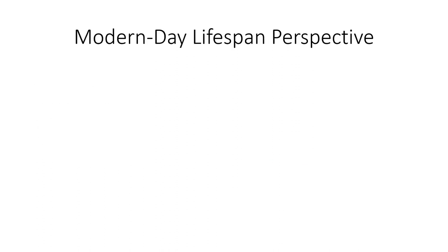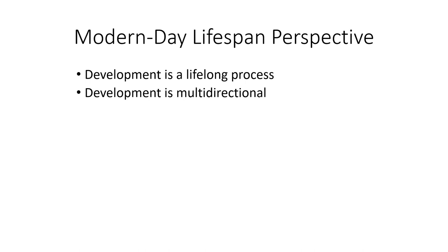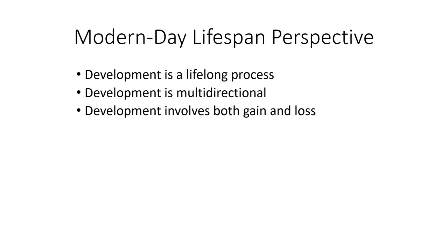Next, let's talk about the modern lifespan perspective in developmental psychology. First, development is a lifelong process — from conception to death. Second, it's multi-directional, meaning people develop in multiple different ways. Two people raised in the same environment with the same genes can end up with two different developmental outcomes. Development involves both gains, losses, stabilities, and neutral changes.